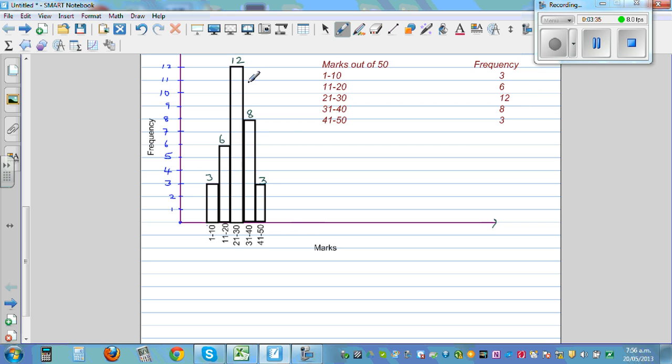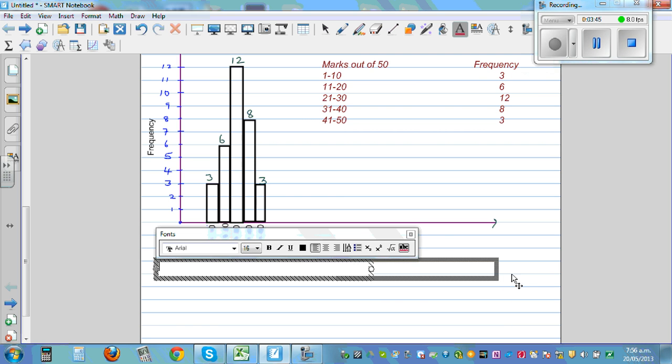So what is that you can see? There is a maximum number of students. Let me type it so that you can see. The most common mark range is what? 21 to 30. That's the most common range.